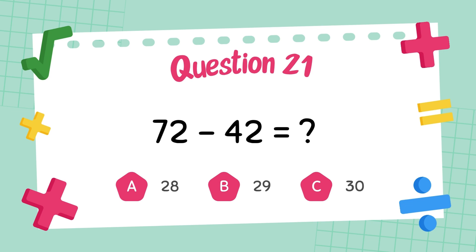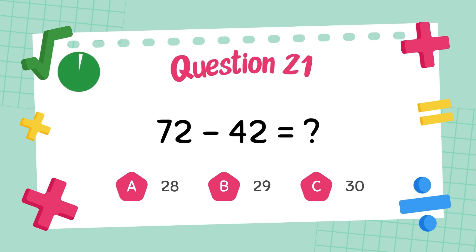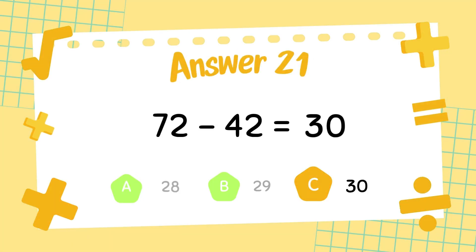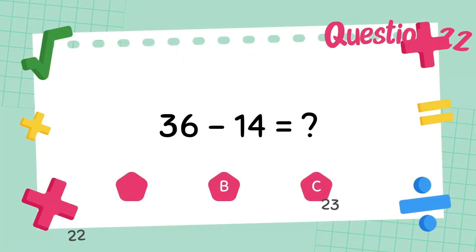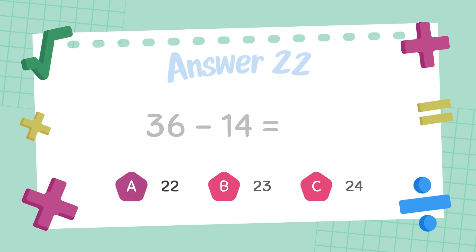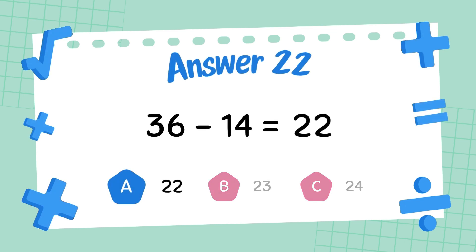What is seventy-two minus forty-two? The answer is thirty. What is thirty-six minus fourteen? The answer is twenty-two.